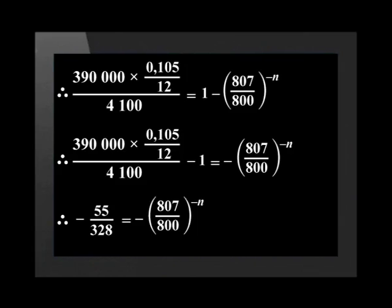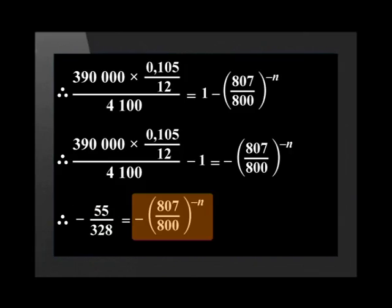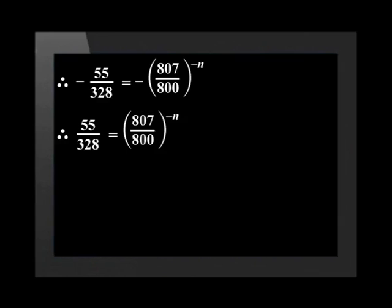This is looking a little messy. So why don't we simplify the left hand side using a calculator? Remember that we shouldn't round off until we have our final answer. The left hand side equals negative 55 divided by 328 and the right hand side equals minus open bracket 807 divided by 800 close bracket to the power of minus n. Next, we multiply both sides of the equation with negative 1.